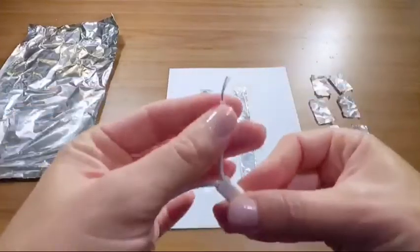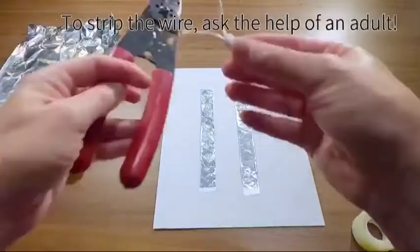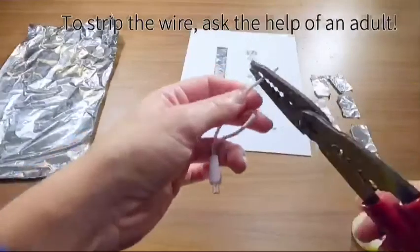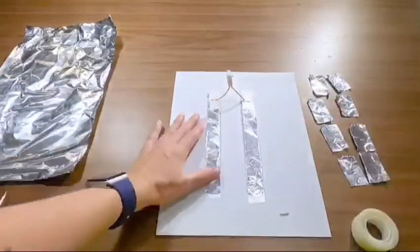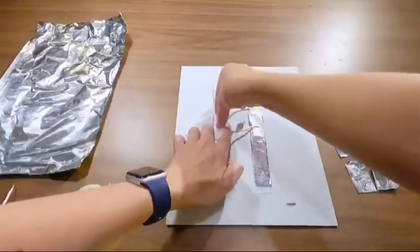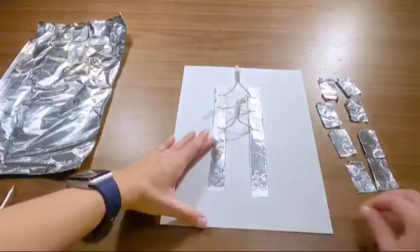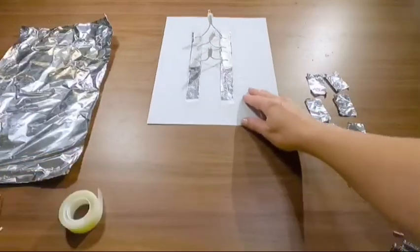Take the lights and make sure that the wire is exposed. If not, use a wire cutter to expose them. Next, tape the ends of the lights into the aluminum foil strips. Place three lights and make sure you have a remaining of two inches at the end of the strip.